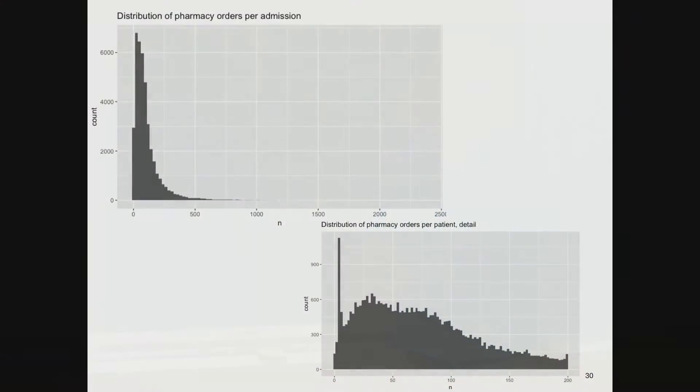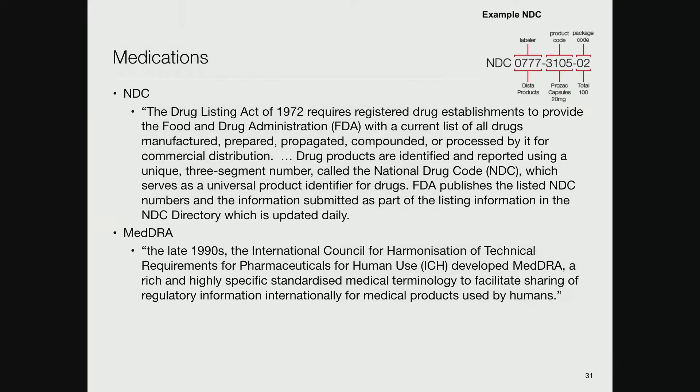How many pharmacy orders per admission? A lot. A very long-tailed distribution goes out to 2,500. There's a large number of people with like two prescriptions and fairly declining number with more. Can you imagine 2,500 things prescribed during a hospital stay?